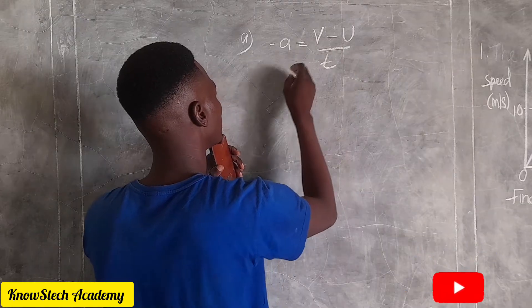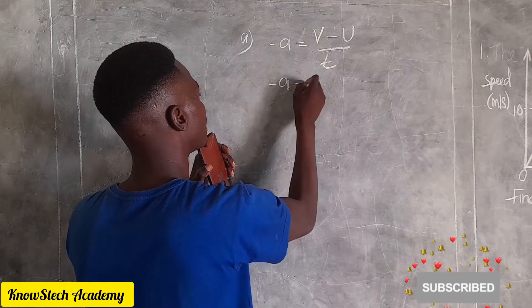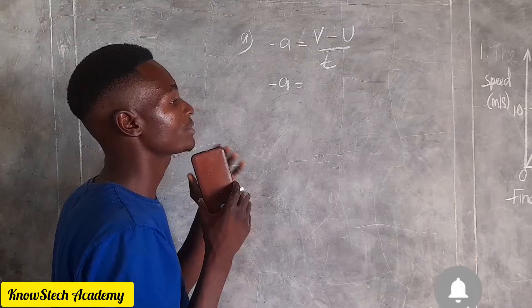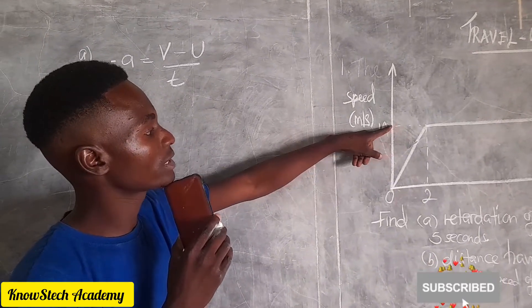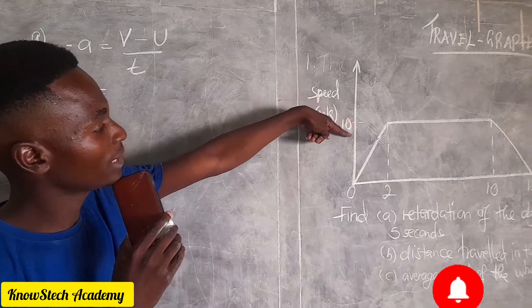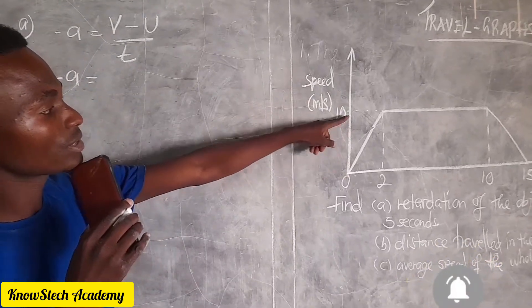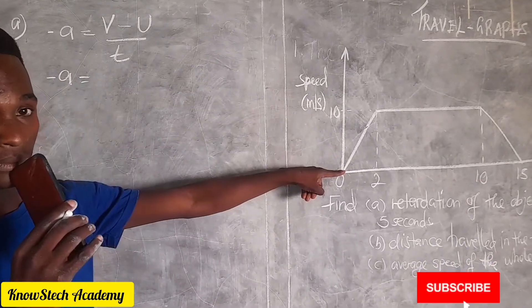We have this one. The final velocity is when this object is not moving, so it moves from 10 coming down to zero. So this is initial and this is the final velocity.